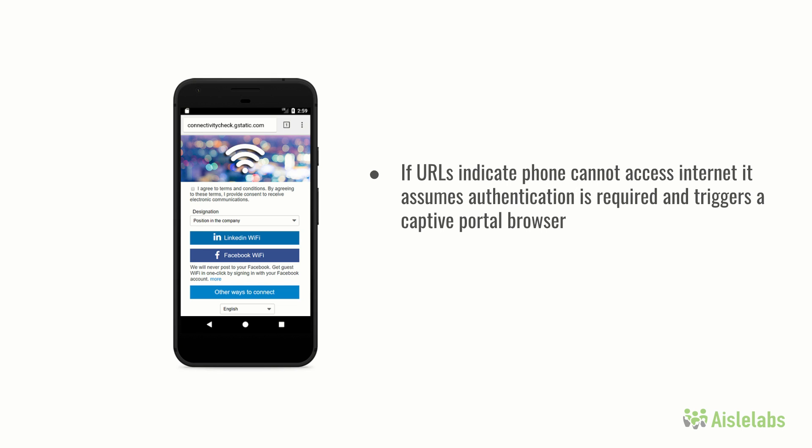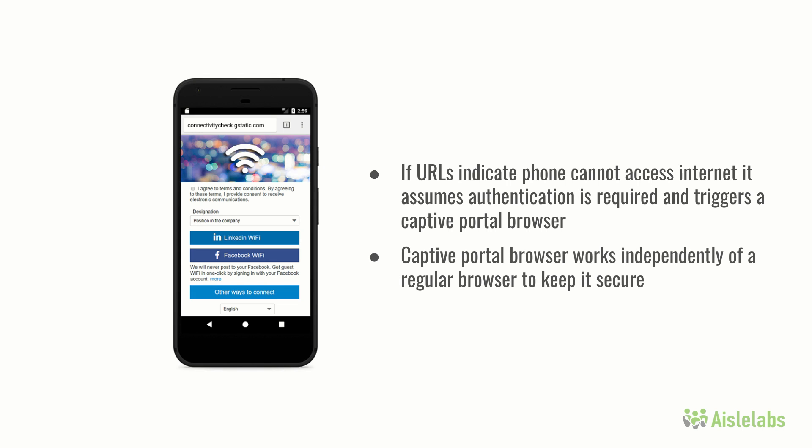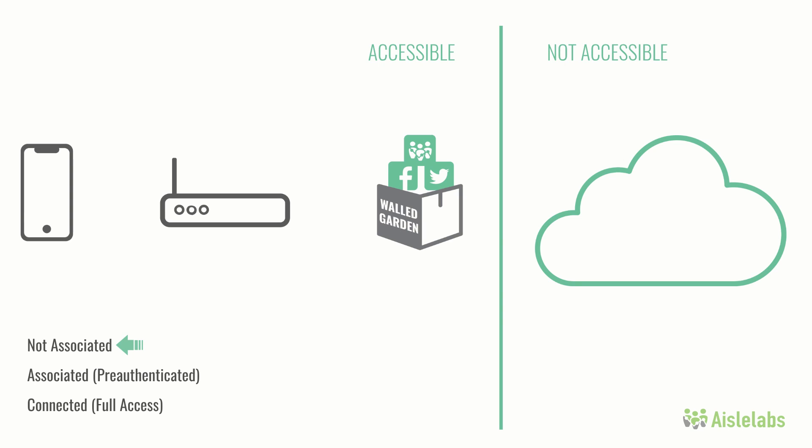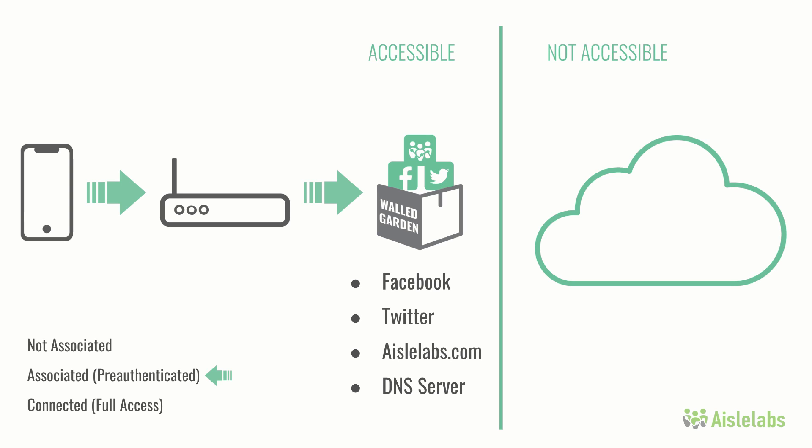A captive portal browser works independently of the regular phone browser. The reason for this is that it creates an isolated sandbox with its own cookies. Those cookies are not persistent and are erased to keep the captive browser secure. In a captive portal scenario, when a user associates to the AP, a user is only given limited access to a pre-authorized walled garden. A walled garden is a list of websites that the user can access without further authorization. iLabs Connect Setup allows certain websites and social media platforms such as Facebook, Twitter, and iolabs.com as part of the walled garden.